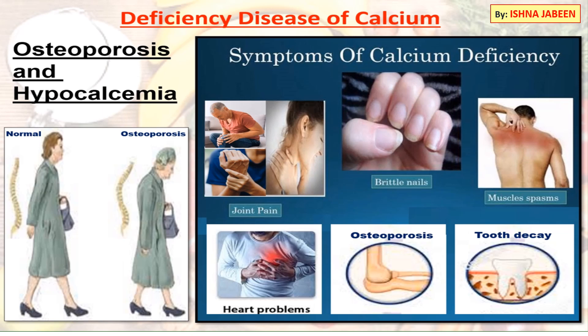Osteoporosis is a disease in which bone weakening increases the risk of broken bones, especially among the elderly. As you can see in the picture, a healthy woman walks with a proper, straight posture, whereas an elderly woman suffering from osteoporosis develops a stoop posture. Symptoms of calcium deficiency include joint pain, brittle nails, muscle spasms, heart problems, osteoporosis, and tooth decay.